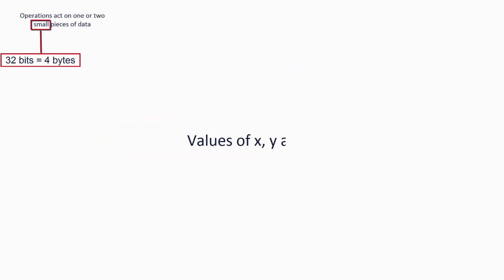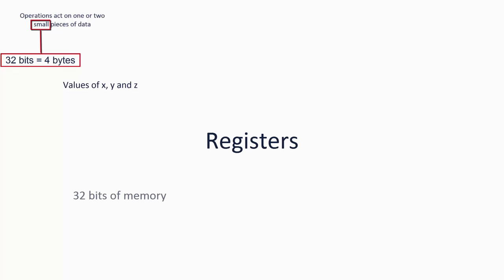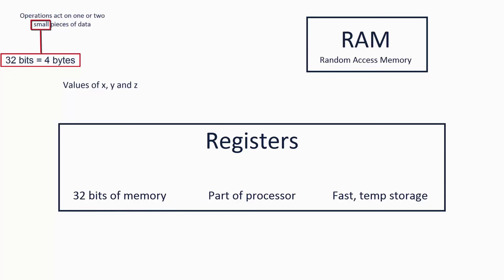Small pieces of data — in this example the values of x, y, and z — are stored in what are called registers. A register is a small bit of memory directly built into the processor, and registers act as very fast temporary storage. In this example, the long-term values of x, y, and z would be stored in RAM — random access memory — which is persistent for as long as the computer is switched on. The values of x and y would be loaded from RAM into registers, the addition would be performed and the result would also go into a register, and the result can then be copied from a register and stored in RAM, thus setting the value of z.